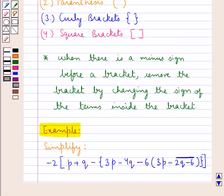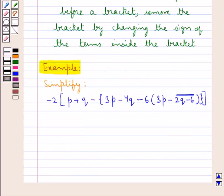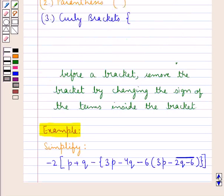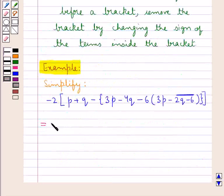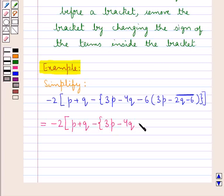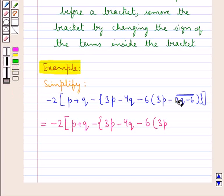So we need to simplify this expression. As you can see, this expression involves brackets, so we can simplify it by following the order of removal of brackets, in which first we need to remove the bar. On removing the bar, we get the expression as minus 2, square bracket open, p plus q minus, curly bracket open, 3p minus 4q minus 6, parenthesis open, 3p. As you can see, 2q minus 6 is under the bar and there is a minus sign before this.